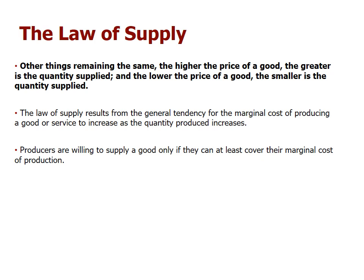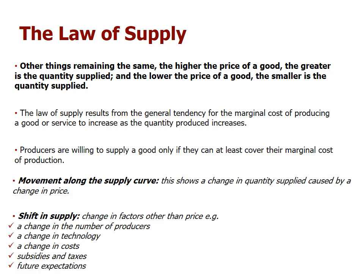This law of supply results from the general tendency for the marginal cost of producing a good or service to increase as quantity produced increases. As you produce more goods, your cost of production increases, which is why suppliers will only want to supply if they can at least cover the marginal cost of production. To summarize: a movement along the supply curve is caused by a change in price; a shift in supply is caused by other factors apart from price.